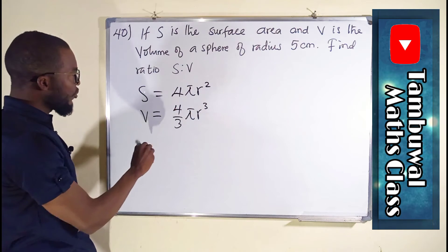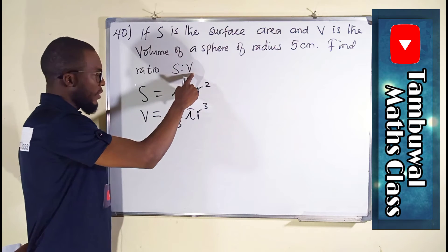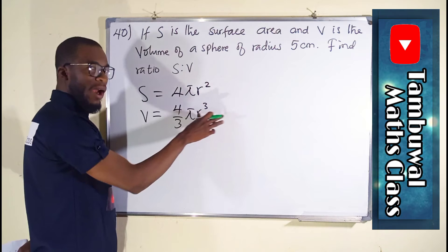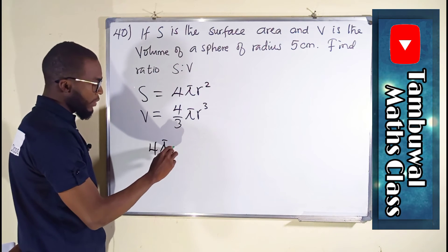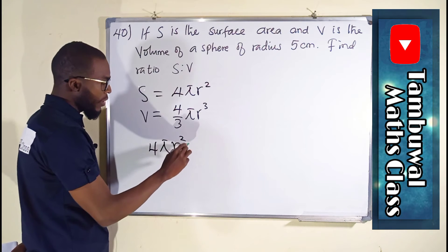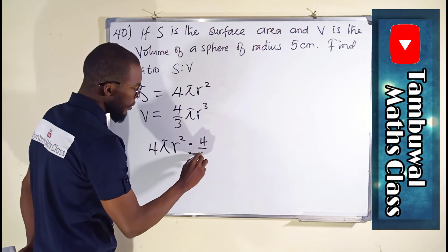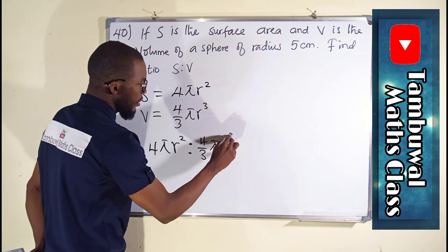So, to represent this ratio form, we say S to V. Therefore, 4πr² to 4/3 πr³. So, we say 4πr² to 4/3 πr³.